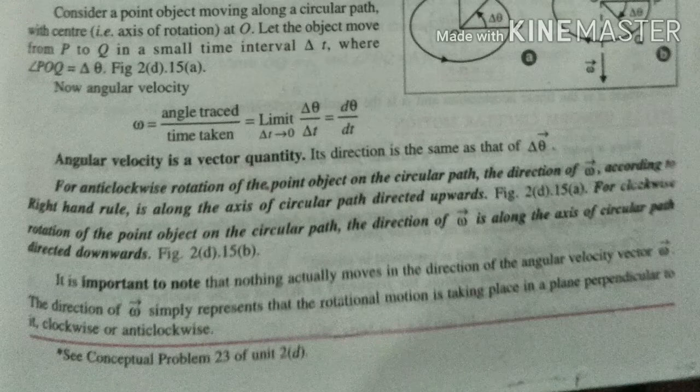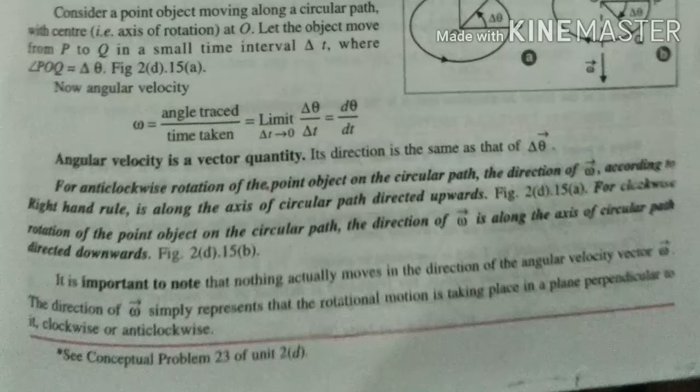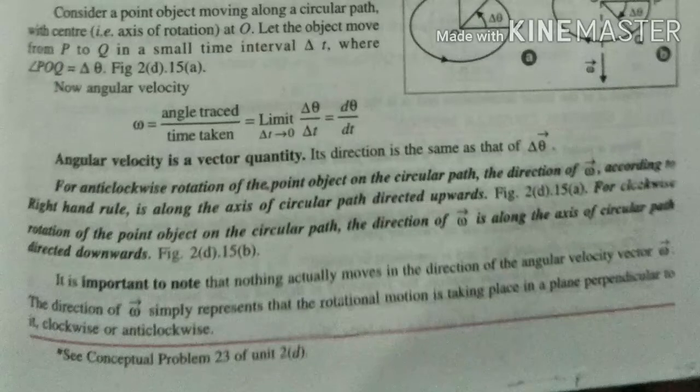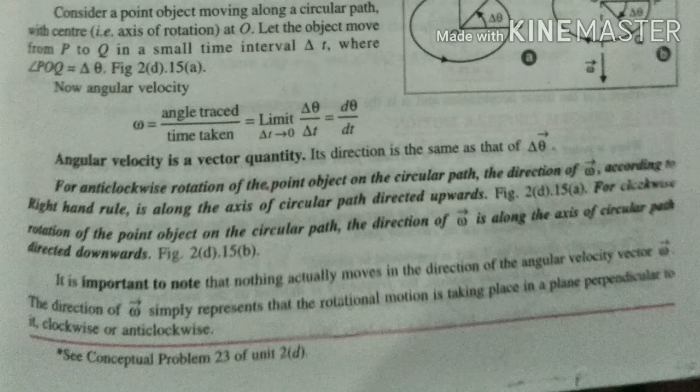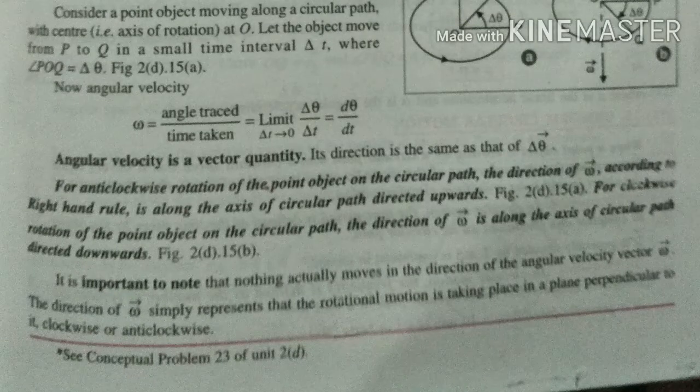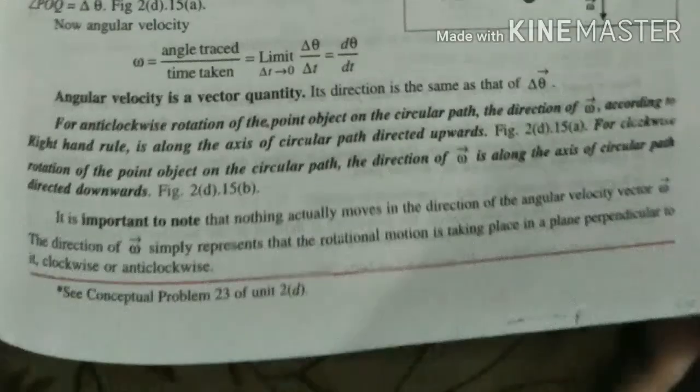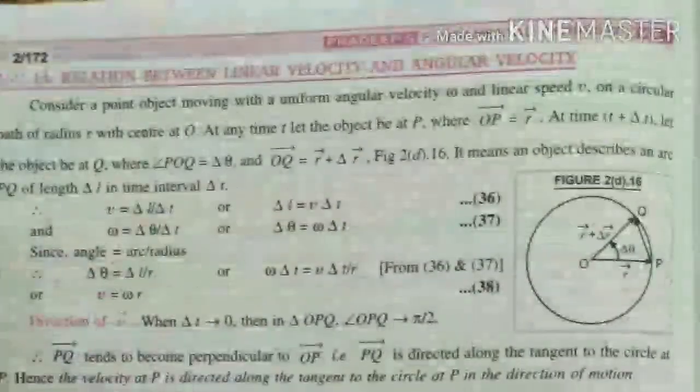For anti-clockwise rotation of the object in circular path, the direction of omega according to right-hand rule is along the axis of circular revolution directed upward. If anti-clockwise rotation, the direction of omega will be upward. If clockwise, then downward.